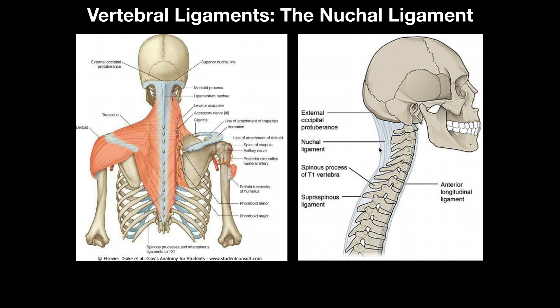Notice as we go down to C7 — one, two, three, four, five, six, and seven — below C7 the nuchal ligament is replaced by the supraspinous ligament. Remember, the supraspinous ligament only existed right below the spinous process of C7 and downward. Above C7 it exists as the nuchal ligament. The nuchal ligament is really just a broader extension of the supraspinous ligament.